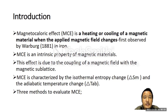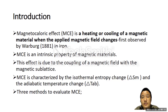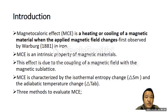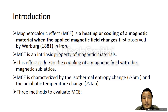Magnetocaloric effect is basically a heating or cooling of a magnetic material when the applied magnetic field changes. When the magnetic field is applied, the magnetic materials get heated up, and when the field is removed, the materials get cooled. This phenomenon was first observed by Professor Warburg in 1881 in iron, which is a magnetic material. Therefore, magnetocaloric effect is an intrinsic property of magnetic materials.